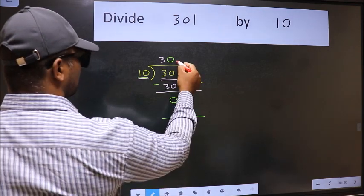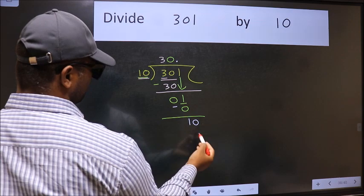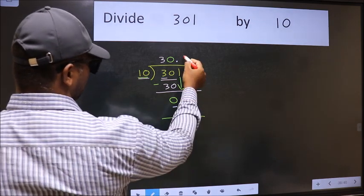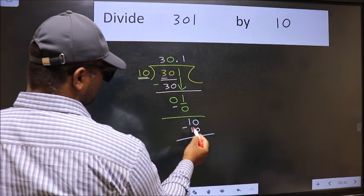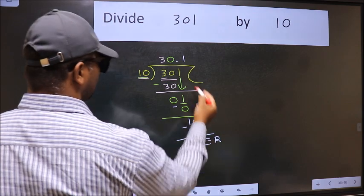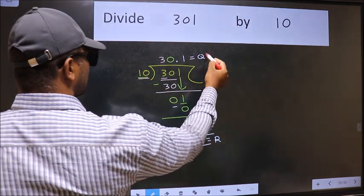So now we can put the decimal point and take 0. So 10. When do we get 10 in the 10 table? 10 times 1 is 10. Now we should subtract. We got 0. This is our remainder, and this is our quotient.